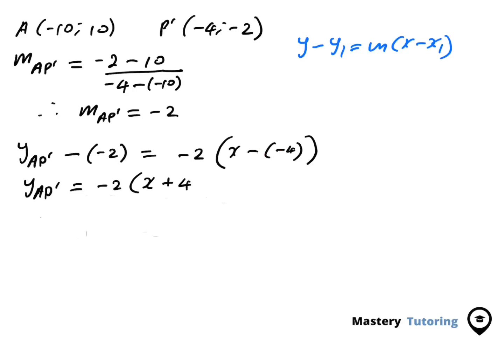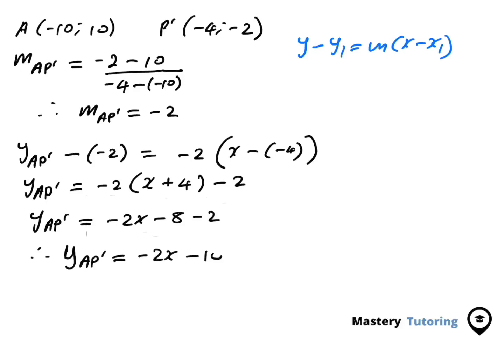Because the negatives combine, when we move the 2 to the other side it becomes negative. Therefore, the equation of line AP' is y = -2x - 10. This is your answer for the equation of line AP'. Thank you for watching. If you have any questions, please leave a comment. If you're new to this channel, please subscribe so that you get updated whenever we upload similar videos. Goodbye.